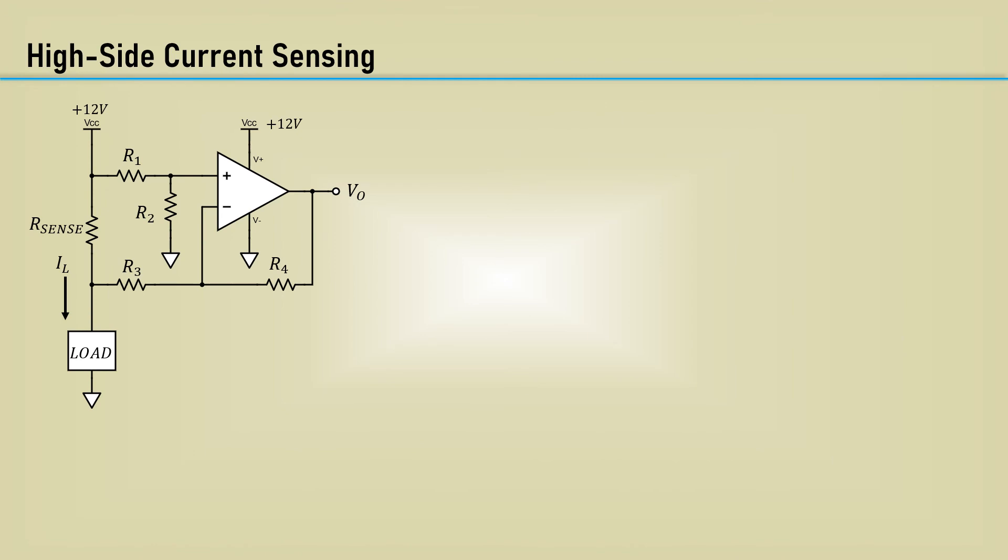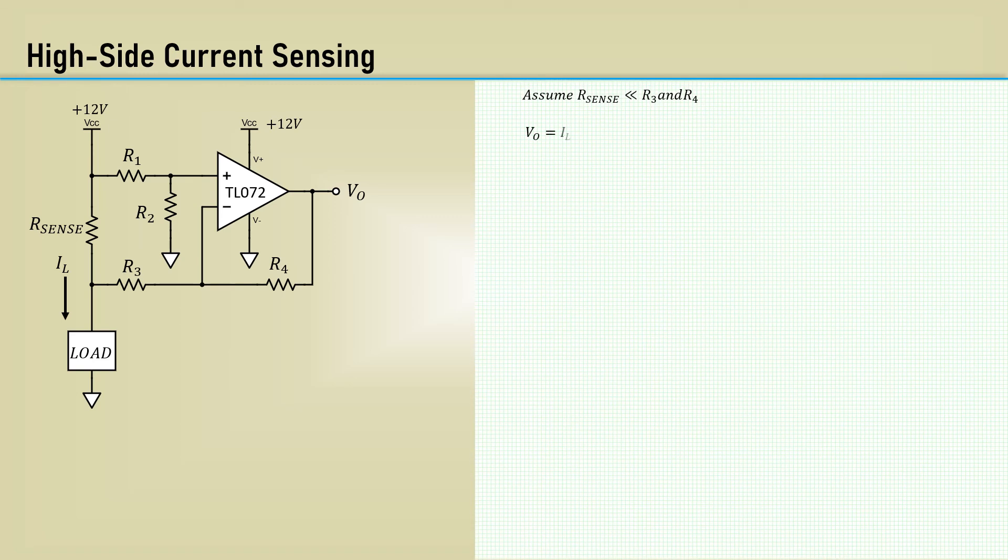Here's a circuit for sensing high-side current by differential amplification of the voltage across a sense resistor. We can use a non-rail-to-rail op-amp like the TL072 we looked at earlier, whose common mode voltage range includes the positive rail. VO is simply the load current times the sense resistance times the ratio of R4 to R3.